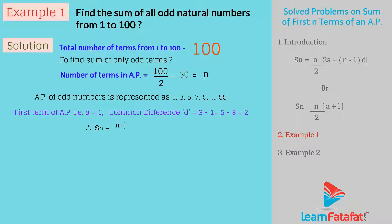Therefore, Sn equals n upon 2 into 2a plus n minus 1 into d. Sn equals 50 upon 2 into 2, which equals 25 into 2. Therefore Sn equals 25 into 50, which equals 2500.